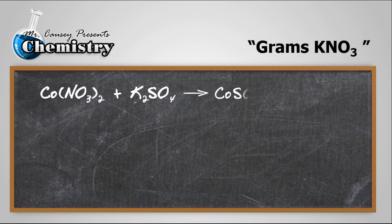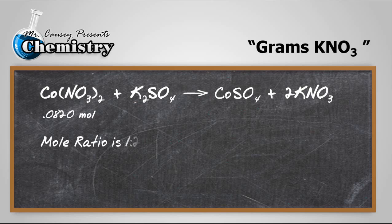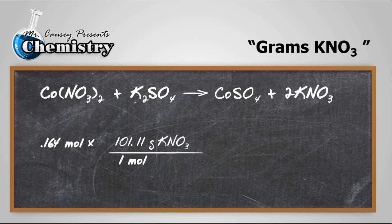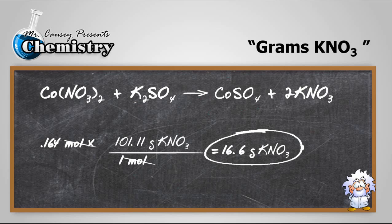Now let's look at grams of potassium nitrate. A little different here this time because even though the others were 1 to 1, this is a 2 to 1 ratio. So we have 0.0820 moles of cobalt 2 nitrate. The mole ratio is 1 to 2 here, so we have twice as many moles of potassium nitrate. That will be 0.164 moles of potassium nitrate. Now we take that number, multiply it to the molar mass, plug and chug it, and we get 16.6 grams of potassium nitrate.